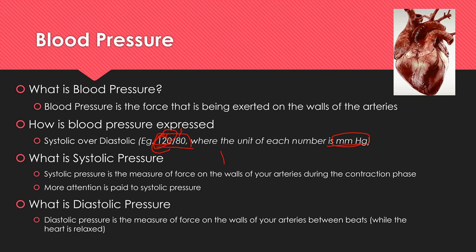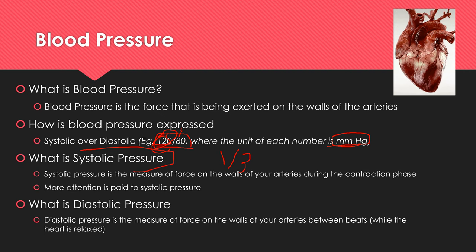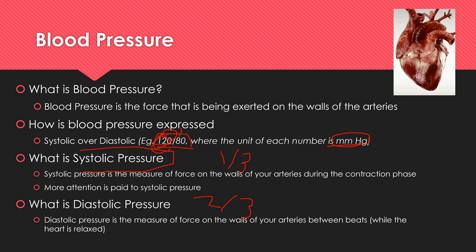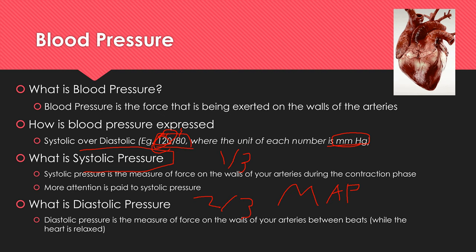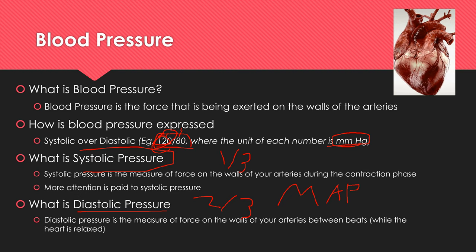Approximately one third of the cardiac cycle is spent in the systolic phase, and two thirds in the diastolic (resting) phase — so the resting phase is twice as long as the beating phase. As a bonus, mean arterial pressure (MAP) can be calculated as: systolic blood pressure plus two times the diastolic pressure, divided by three.